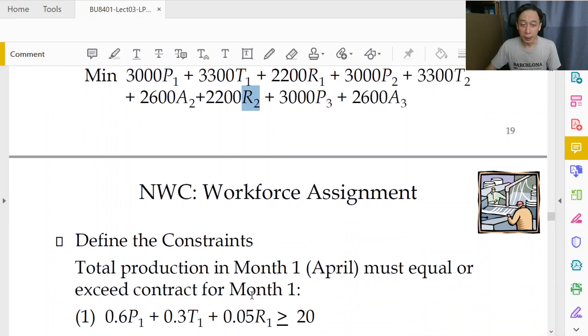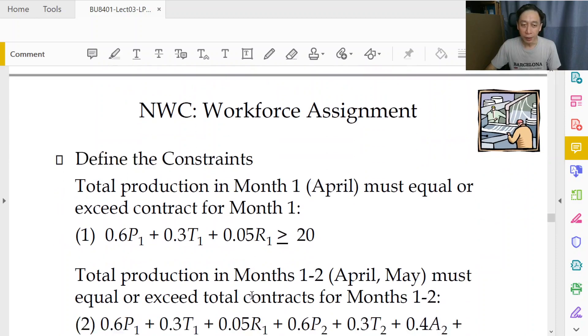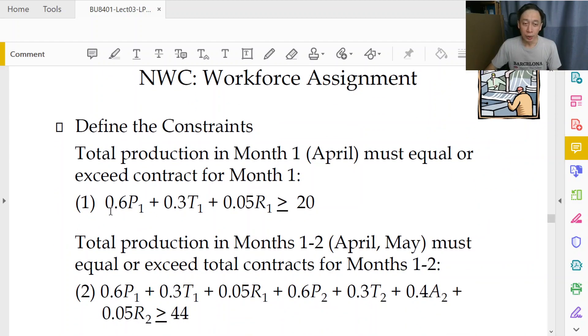Now let's take a look at the first month's production. In the first month we will produce 0.6 of a wing if we have one production worker, so we have P1 production workers—this can be 5, 10, 20, we don't know—multiply by 0.6. Likewise in the first month we have trainers, we have R the recruits, but no apprentices. In total we will get this quantity of wings being done, and we need to supply 20.